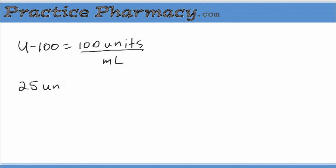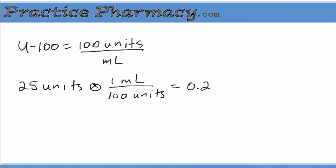So for instance, if we want 25 units of insulin, we would use the conversion factor of 100 units per milliliter, take the inverse — which is 1 milliliter over 100 units — and when we multiply that out, the units cancel. 25 is divided by 100, and we're left with 0.25 milliliters, or in other words, 25 hundredths of a milliliter.